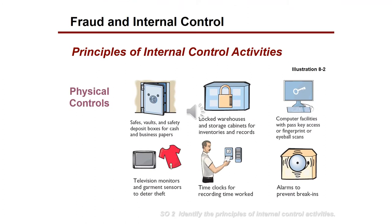There are also physical controls you might notice around you: safes, vaults, and safety deposit boxes for cash and business papers; locked warehouses and storage cabinets for stock, inventories, and records; computer facilities with passkey access, fingerprints, or eyeball scanners; television monitors, camera monitors, and garment sensors to deter theft — as you notice when shopping for clothes — time clocks for recording employee hours, and alarms to prevent break-ins.